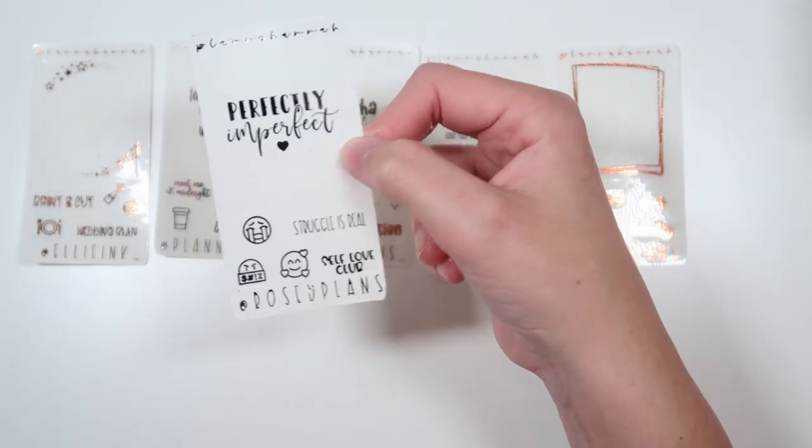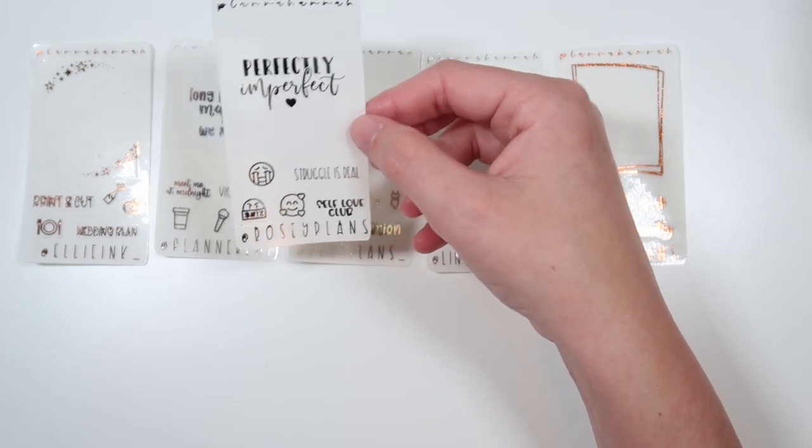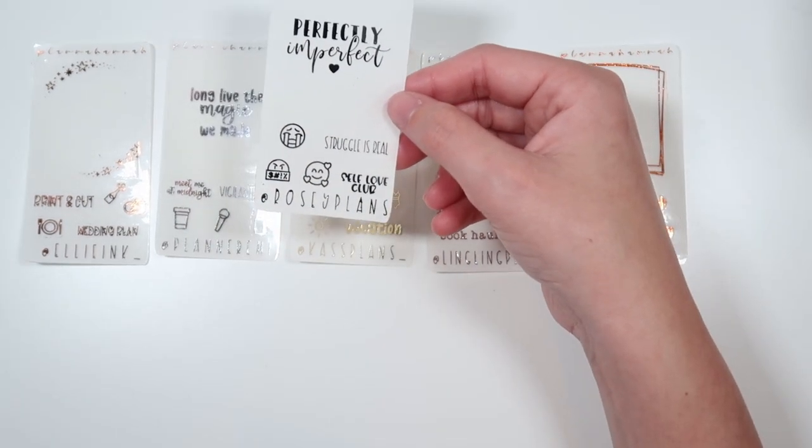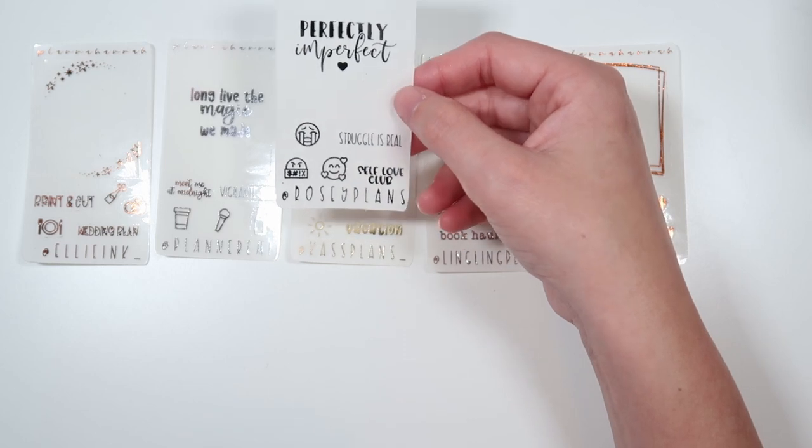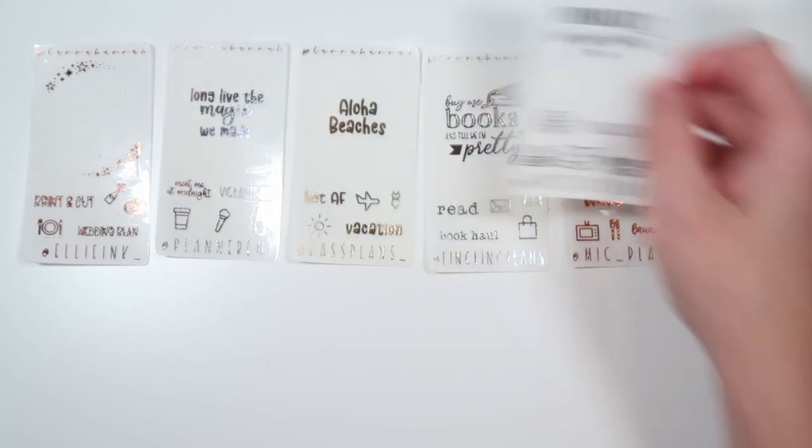Then we have Rosie from Rosie Plans. This is being shown in zebra. Her quote says perfectly imperfect. And then her scripts are struggle is real and self-love club, and she's got a sad, angry, and happy emoji.